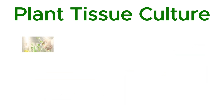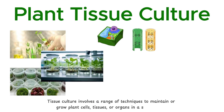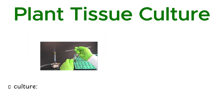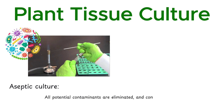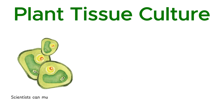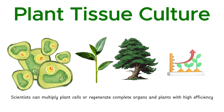At its core, tissue culture involves a range of techniques to maintain or grow plant cells, tissues, or organs in a sterile setup. This process relies on aseptic culture, where all potential contaminants are eliminated, and controlled environmental conditions ensure optimal growth. By fostering a clean and isolated environment, scientists can multiply plant cells or regenerate complete organs and plants with high efficiency.